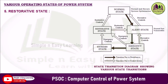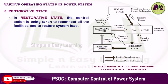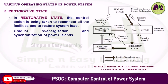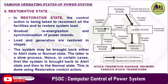In the restorative state, control actions are taken to reconnect all facilities and restore system load through gradual re-energization and synchronization of power islands. Load and generation are restored in stages. The system may be brought back to either the alert state or the normal state. Since going directly to the normal state is a slow process, in certain cases the system is first brought back to the alert state and then to the normal state.